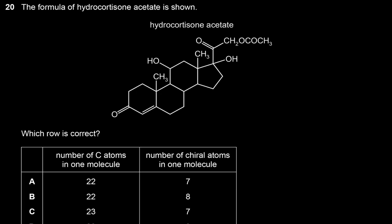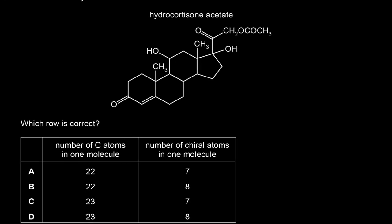The formula of hydrocortisone acetate is shown. Which row correctly gives the number of carbon atoms and chiral centers? Counting the carbons: 1, 2, 3… through to 23 total carbon atoms. So it's definitely not A or B.